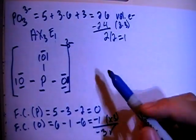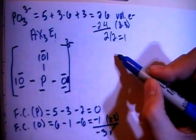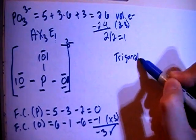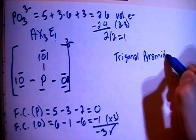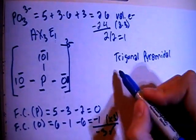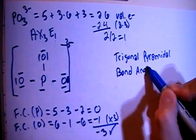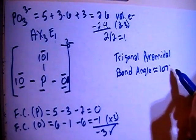Now in terms of shape, with the AX3E1 geometry, this is going to be a trigonal pyramidal shape. And when you have that kind of shape, the bond angle is going to be approximately equal to 107 degrees.